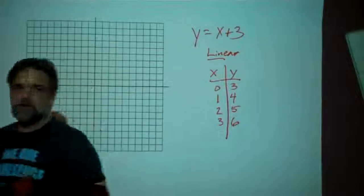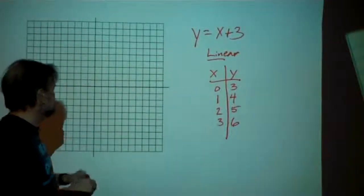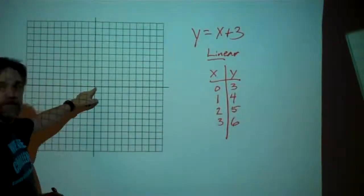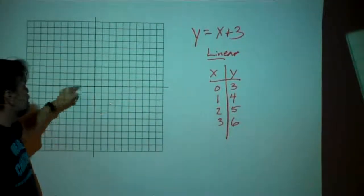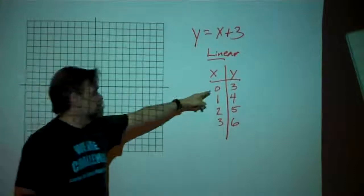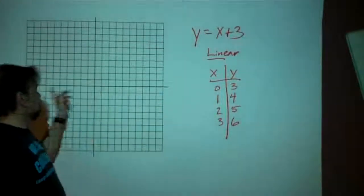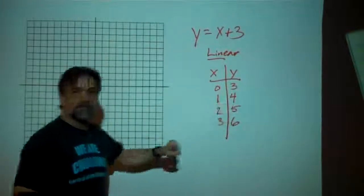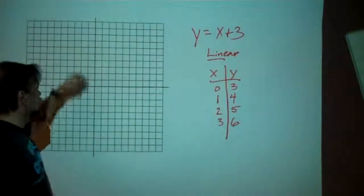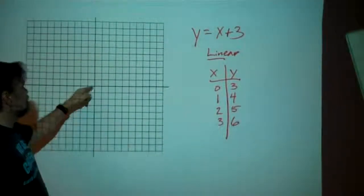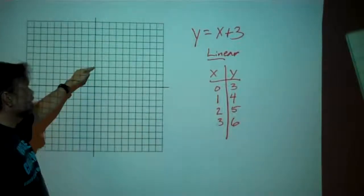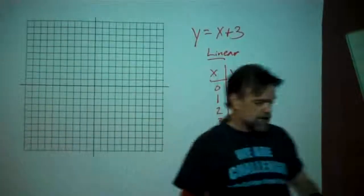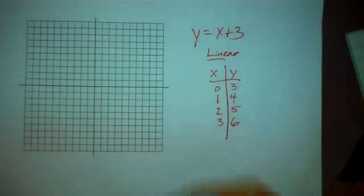Now let's have a little refresher on how to plot points. This is the origin — this is the point (0, 0). So if I want to graph the point (0, 3), my x-coordinate tells me how far left and right to go, and my y-coordinate tells me how far up and down to go. The point (0, 3) is going to not go anywhere left and right because it's 0, and then we go up 3, so we end up at the point (0, 3) right there.